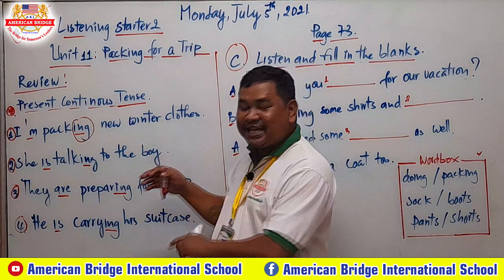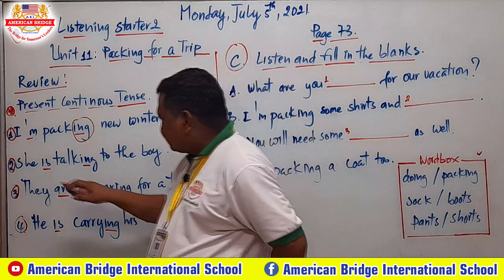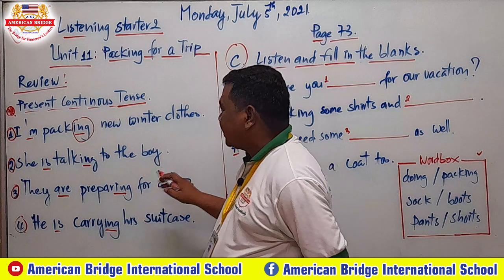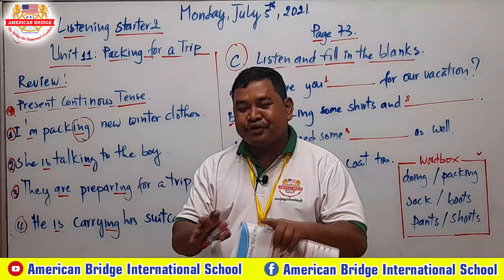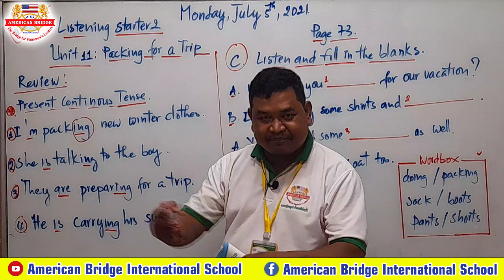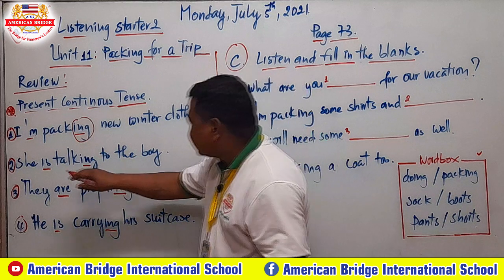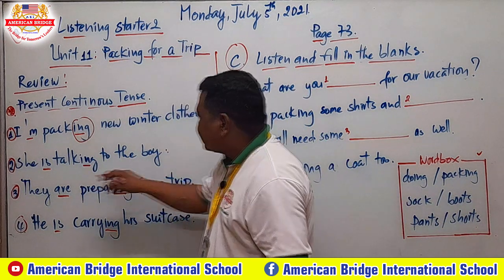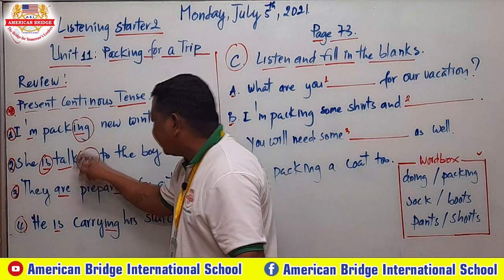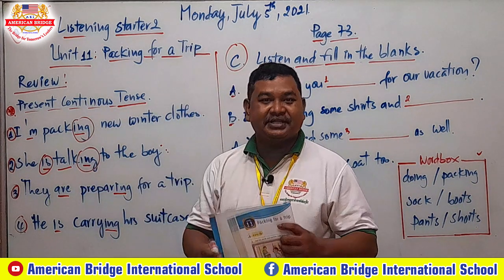Move to another example: 'She is talking to the boy' — she is preparing something before the trip. So 'she is' plus 'talk' with -ing becomes 'talking.' This is present continuous tense.